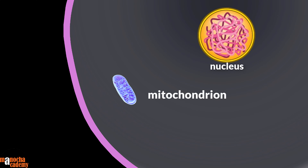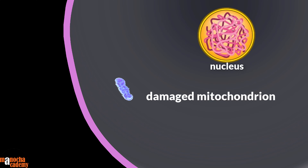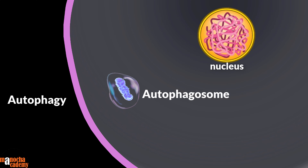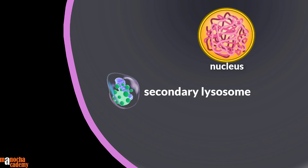Sometimes lysosomes need to digest the cell's own worn-out organelles — for example, a damaged mitochondrion. That mitochondria is surrounded by a membrane forming a vacuole. Since this vacuole contains the cell's own product, it is called an autophagosome. When a primary lysosome fuses with an autophagosome, a secondary lysosome is also formed.